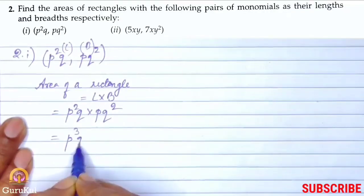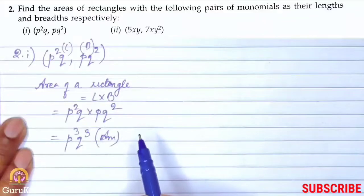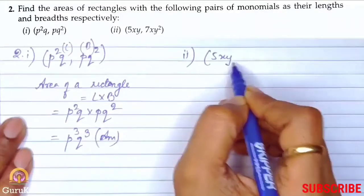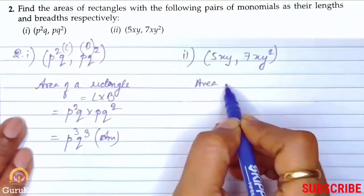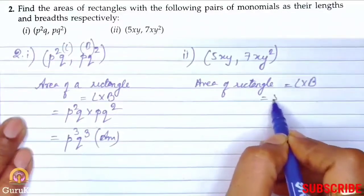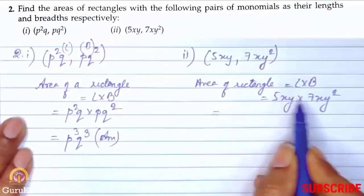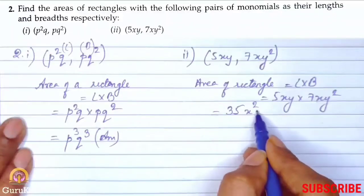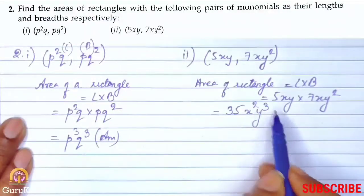So p square q into pq square, that gives us the answer p to the power 3, q to the power 3, because we are adding the powers. This is the area of the given measurement of the rectangle. Second part: it is 5xy and 7xy square. Area of rectangle is length into breadth, that is 5xy into 7xy square. That gives us 5 times 7 is 35, x to the power 2, and y to the power 3. So the answer is 35x square y cube.